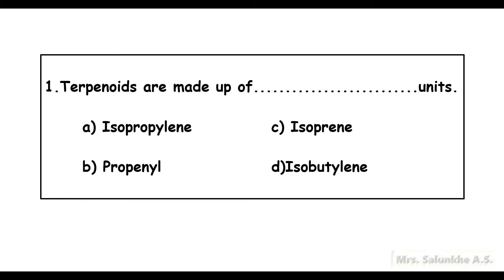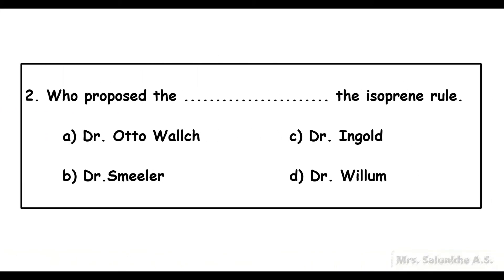Question 1. Terpenoids are made up of isoprene units. Who proposed the isoprene rule?